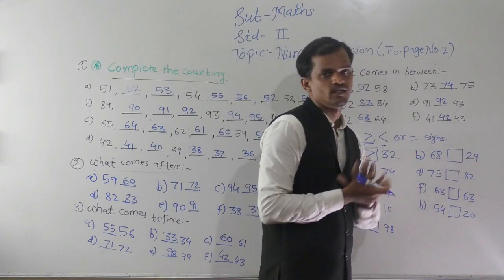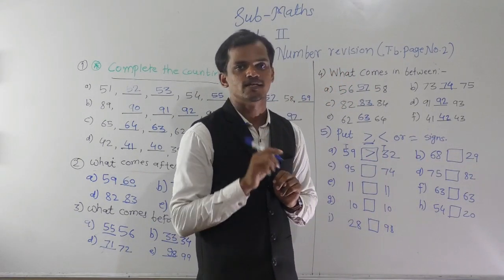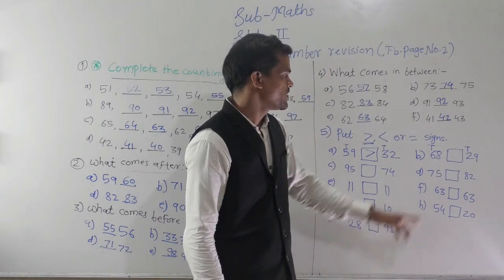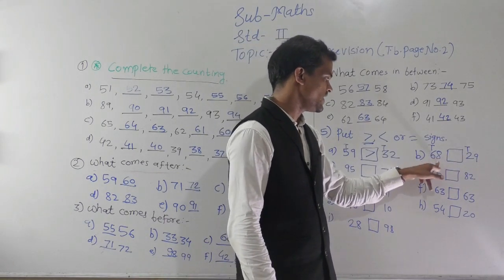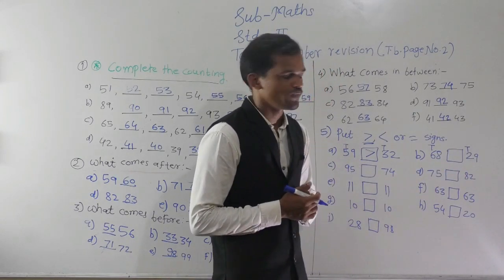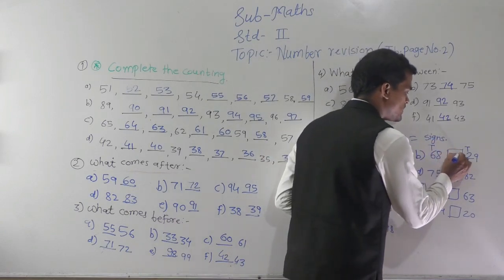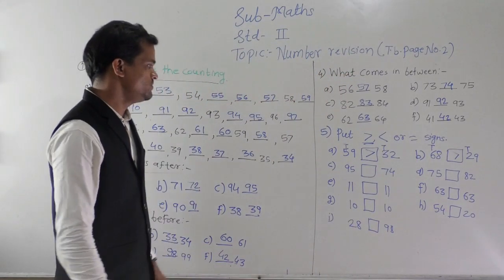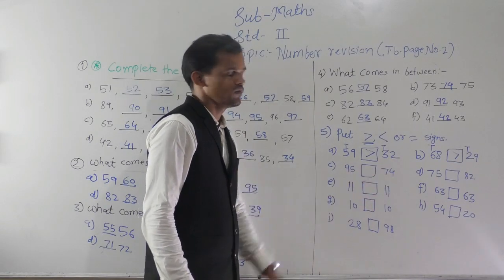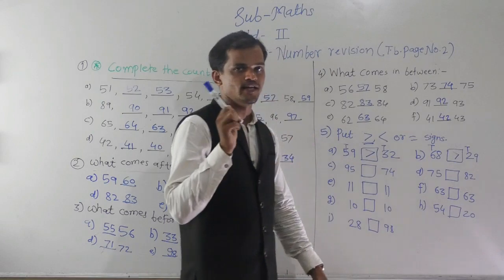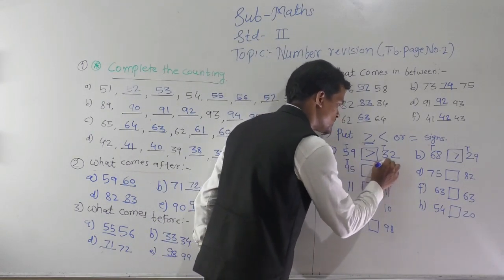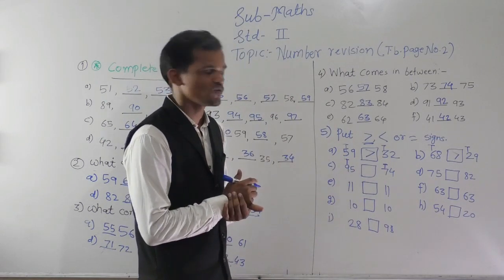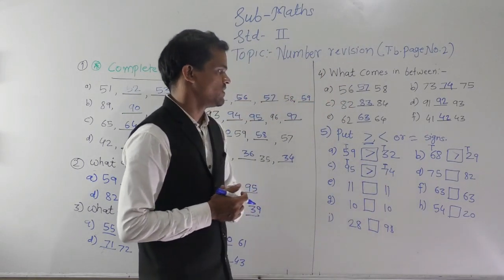Then 68 and 29 — also two-digit numbers, so compare the tens digit. 6 is greater than 2, so 68 is greater than 29. The open side of the sign should face 68. Then 95 and 74 — compare the tens digit: 9 tens and 7 tens, which is bigger? 9 tens. So the sign faces 95.